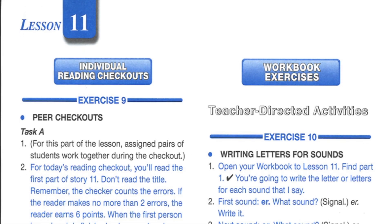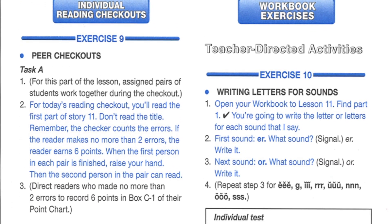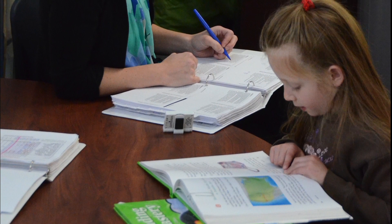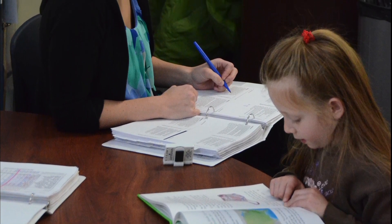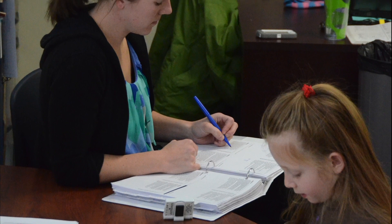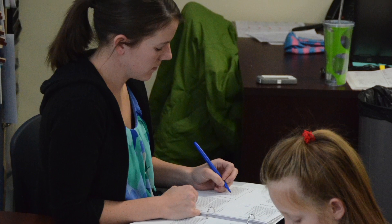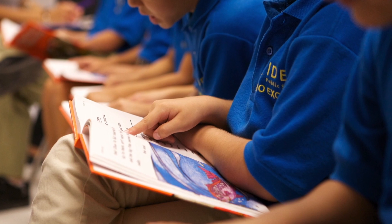The reading programs contain checkouts, an informal reading inventory designed to assess students' accuracy and fluency rate with familiar material. Students individually read a selected passage from a story they have already read as a group as part of their daily lesson. The teacher records the time it takes for the student to read the passage and the errors made, and matches them against the preset time and error limit. If students do not meet the criteria, they re-read the passage. Students start the checkouts once they can read connected text.